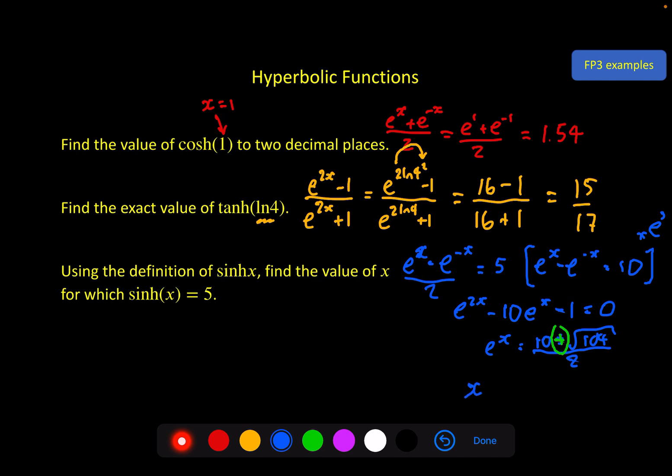Then at the end don't forget your x is actually the log of all of that. And again at this point you should just stick that in your calculator, and if you've done it all correctly, hopefully you get 2.31 to two decimal places.